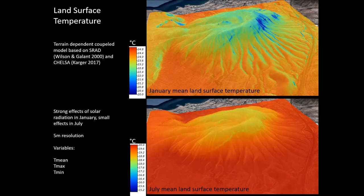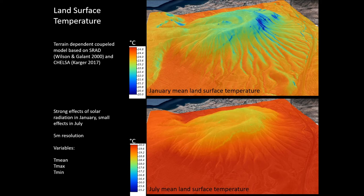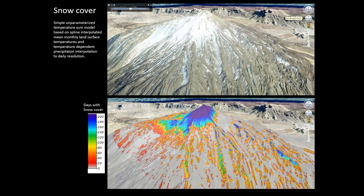A nice feature of model output statistics is that they are scale independent — you can apply the same algorithm on a 25-kilometer grid, a 5-kilometer grid, a 1-kilometer grid, or even a 5-meter resolution for the Canary Islands. Here is an example of a small mountain where temperatures are influenced by solar radiation: in January the southern sides are much warmer than the shaded northern sides, while in July temperatures are all slightly higher with a different pattern. You can easily derive variables like snowfall from this, and again these are scale independent.